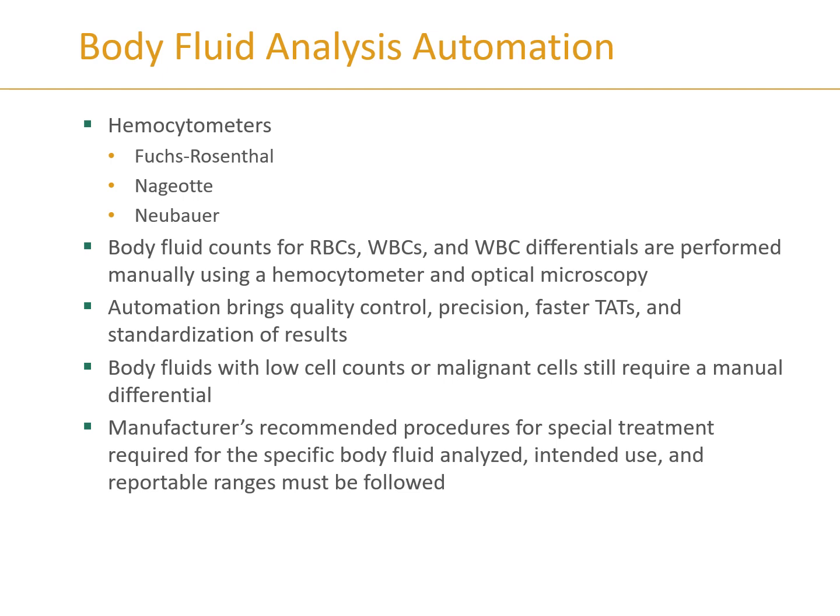For manual body fluid testing, a hemocytometer is used. Automated testing speeds up the process, performs quality control and precision checks, and brings standardization that reduces variability between technicians. If cell counts are very low or malignant cells are present, a manual differential is still required, including cytocentrifuge spin slides. Anything potentially malignant should be confirmed, so that extra step is not a significant hardship.